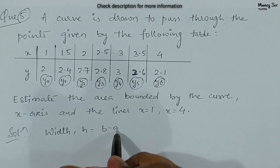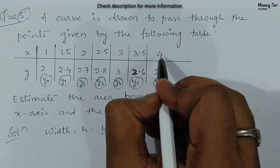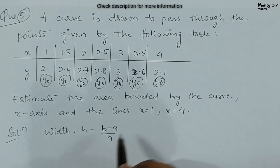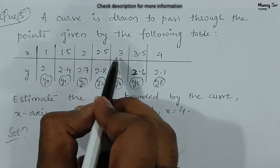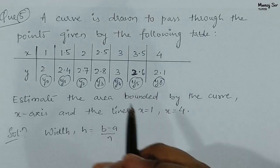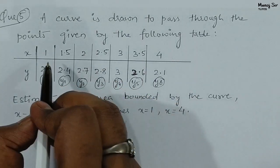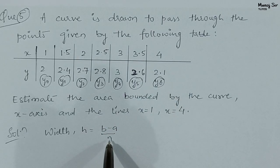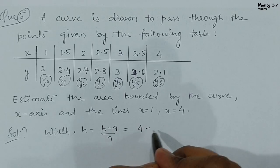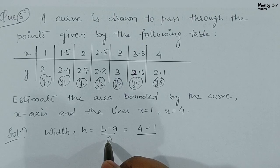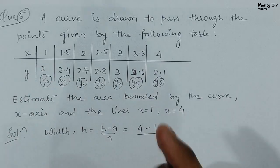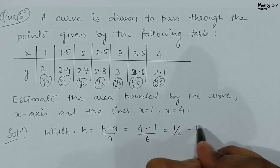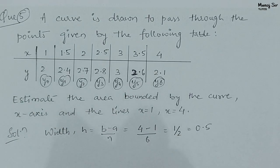We can say the width h equals 0.5, but we have to show it by formula: h = (b - a) / n. Here b is the extreme limit, that is 4; a is the initial limit, that is 1; and n is the number of steps. The number of elements given is 7, so the number of steps n = 7 - 1 = 6. Therefore h = (4 - 1) / 6 = 3/6 = 0.5.